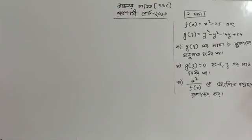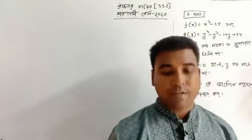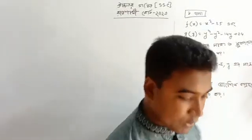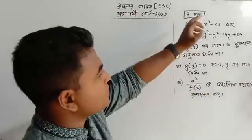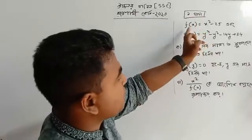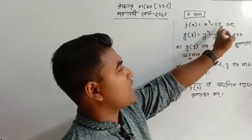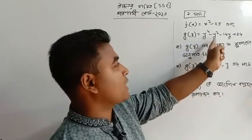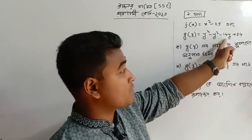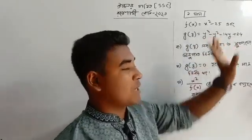We will start the class. This is the calculator — RPSC. If you have a question: f of x equal to x square minus 25, and z of y equal to y cube minus y square minus 14y plus 24.